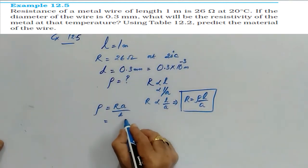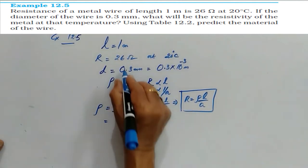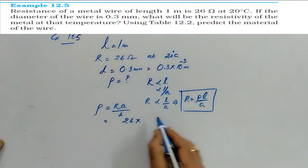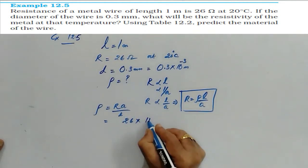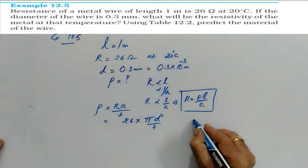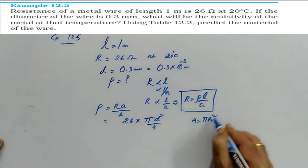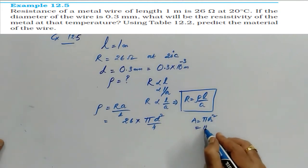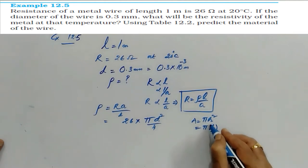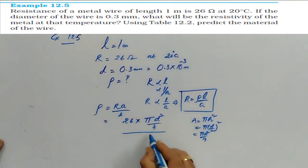So you have to simply substitute. 26 ohm is given, area, diameter is given, area can be written as cross section area can be written as pi D square by 4. How? Area is equal to pi R square. So R is equal to half of the diameter. So you can write pi D square by 4 divided by this length, 1 meter.